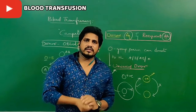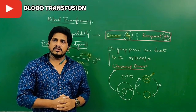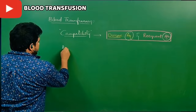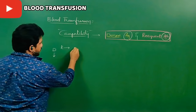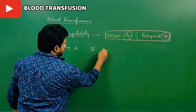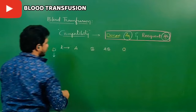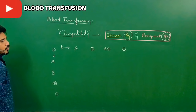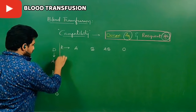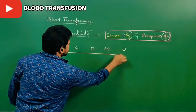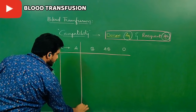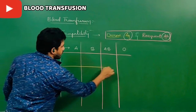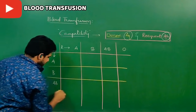By this concept we learn compatibilities and incompatibilities between all four blood groups. Now let us summarize the entire scenario in a table format. Recipients are in one direction — A, B, AB, O — and donors in another direction — A, B, AB, O. Let us check recipient-donor compatibilities.